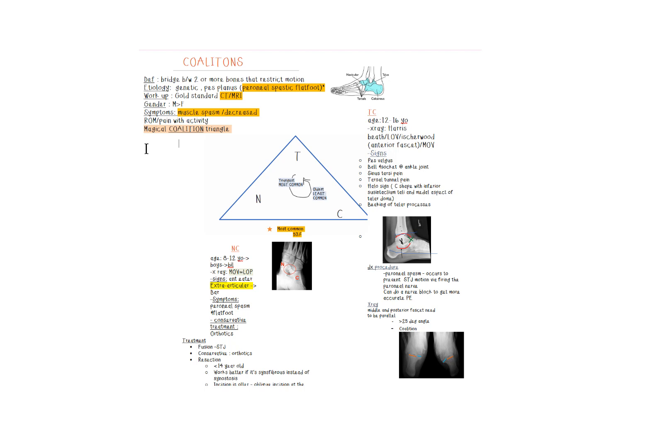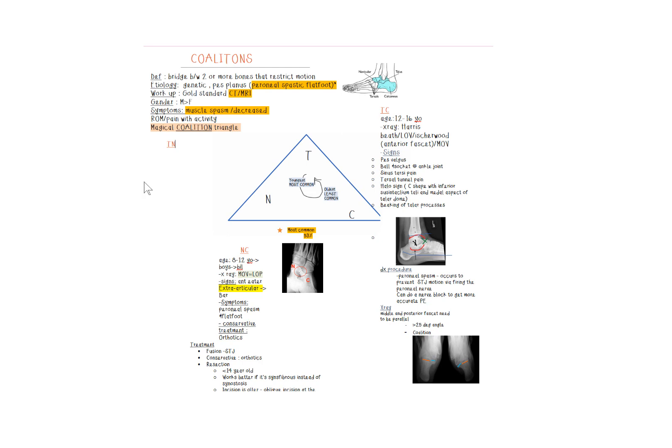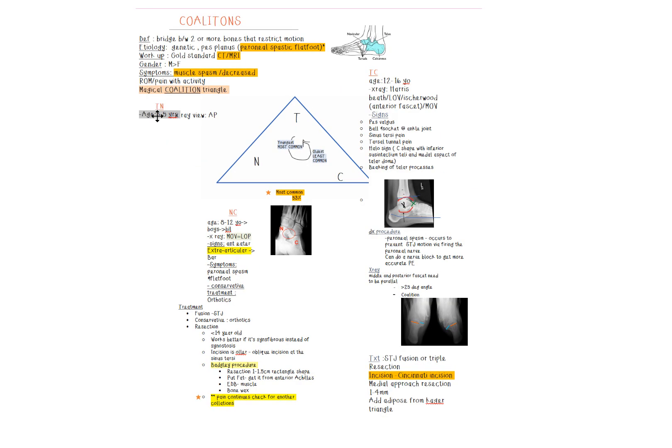Moving on to talonavicular coalition. This one's found in the youngest patient population group, usually between the ages of three and five years old, so pretty young population. The x-rays for this one, doing an AP, you're usually able to see this pretty clearly.